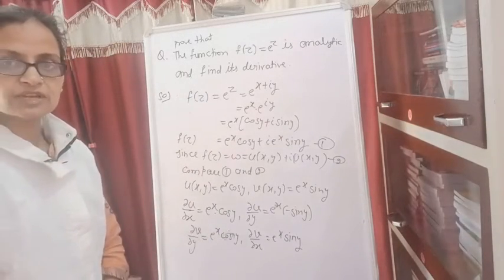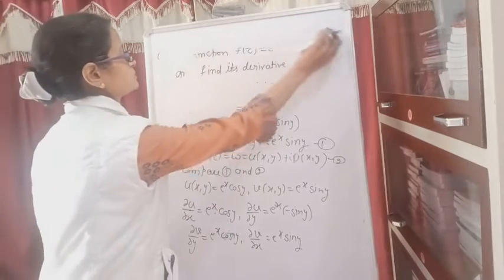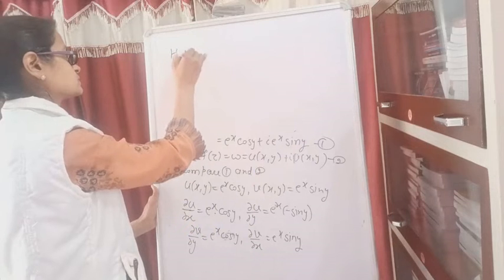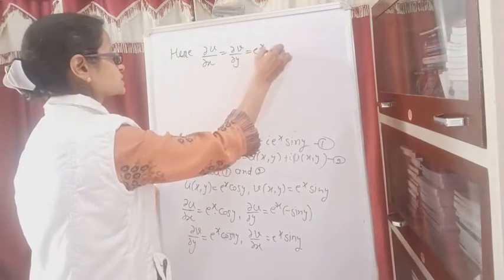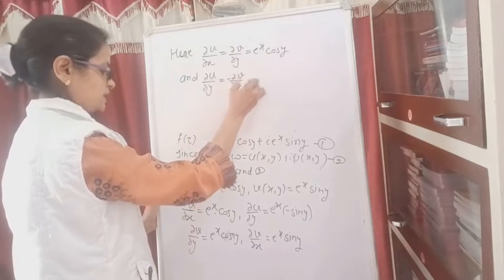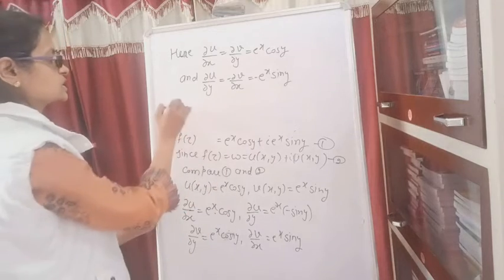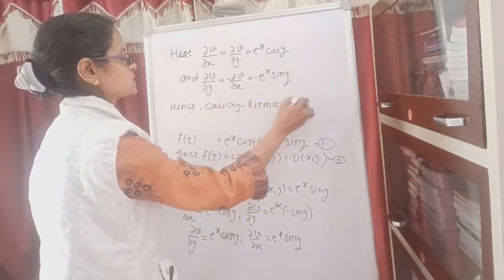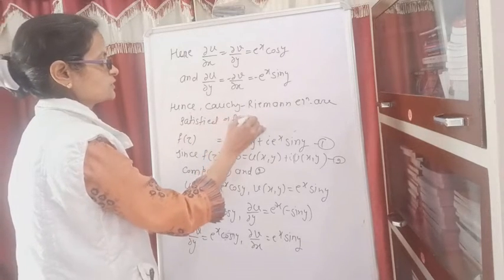Now you can see that del u upon del x equals del v upon del y — that is, both equal e to the power x·cos y. And del u upon del y equals minus del v upon del x — that is, both equal e to the power x·sin y. The Cauchy-Riemann equations are satisfied. Hence, the function f(z) is analytic.